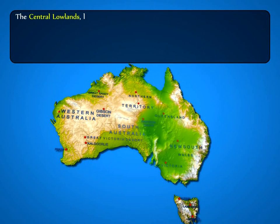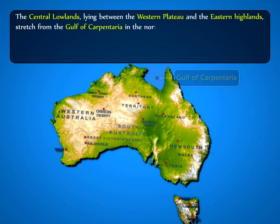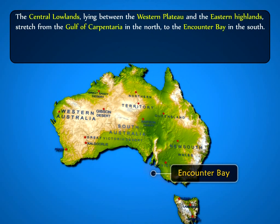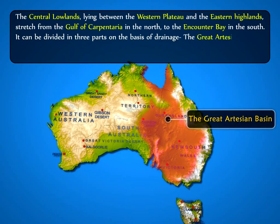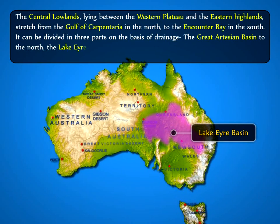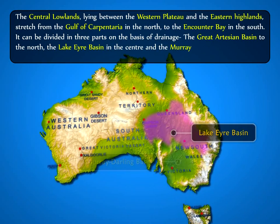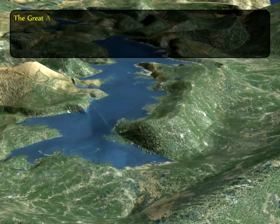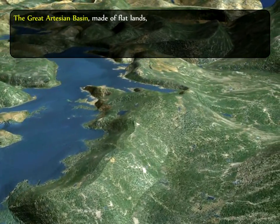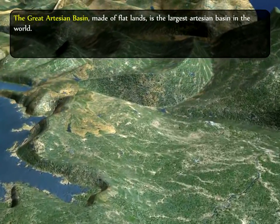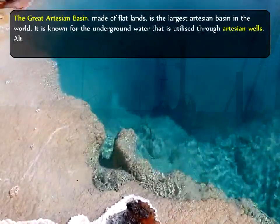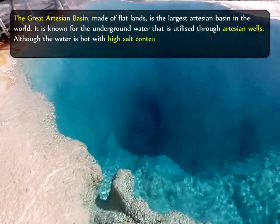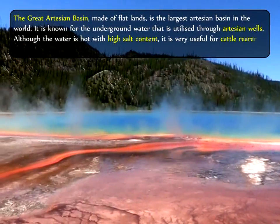The Central Lowlands, lying between the Western Plateau and the Eastern Highlands, stretch from the Gulf of Carpentaria in the north to Encounter Bay in the south. It can be divided into three parts based on drainage: the Great Artesian Basin to the north, the Lake Eyre Basin in the center, and the Murray-Darling Basin to the southeast. The Great Artesian Basin, made of flat lands, is the largest artesian basin in the world, known for underground water utilized through artesian wells. Although the water is hot with high salt content, it is very useful for cattle rearers in this dry region.